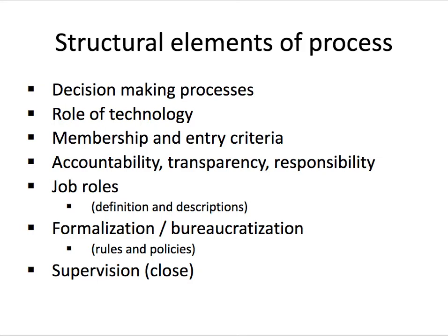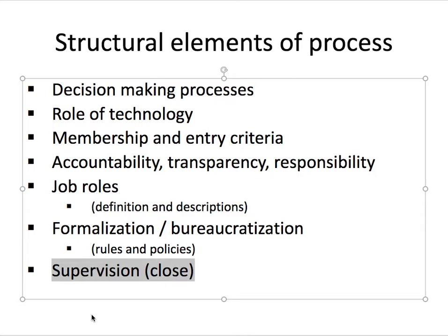There are some structural elements of processes which are often confused with organisational structure but are useful to think about differently: decision-making processes, the role of technology, membership and entry criteria, job roles, formalisation, and the style of supervision. These aren't about the form of the organisation — they're about how the organisation does things. However, if an organisation chooses close supervision, it tends to need strong bureaucratisation and clear job roles, so choosing a particular process has implications for the structure.